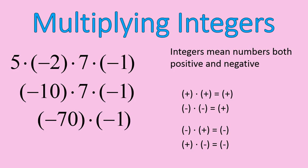And negative 70 times negative 1 gives me positive 70. So you can see the rules in play there. A positive times a negative gives you a negative. Negative times positive gives me a negative. And then a negative times a negative gives me a positive at the end there.